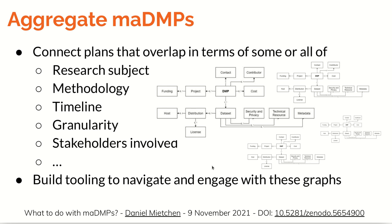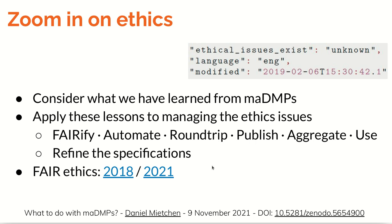In the paper which presented the application profile there was a sample DMP, and that sample DMP had the ethical issues marked as unknown. I think that is something we should zoom in on instead of leaving it unknown, because in building the specs for machine actionable data management plans and thinking about the role of DMPs in the research ecosystem, we've learned a number of things and we should apply those lessons also to handling ethics issues.